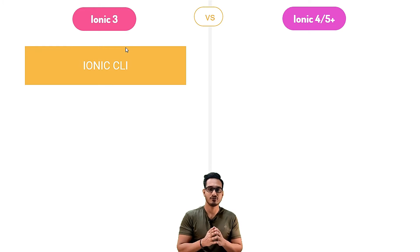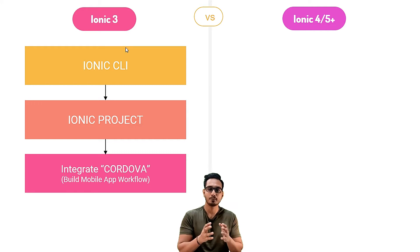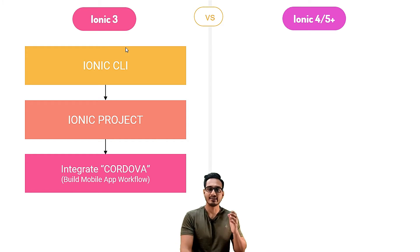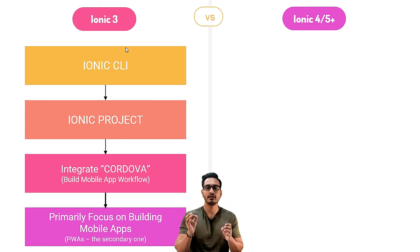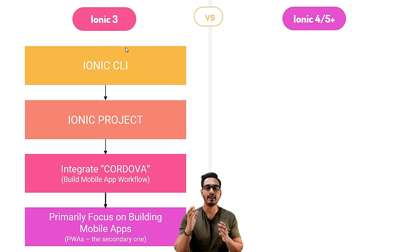In Ionic 3, we have to install the Ionic CLI, then the Ionic project is prepared. After that, we integrate Cordova plugins to prepare for native applications for the Play Store and App Store. It is mainly used for building a mobile app workflow, and the final output is a mobile application. Ionic 3 mainly focuses on building mobile apps; PWA can also be built but was a secondary focus. With Ionic version 2, PWA was not possible at all.